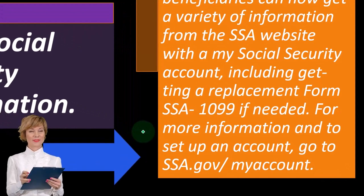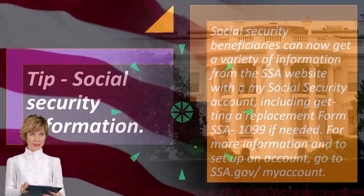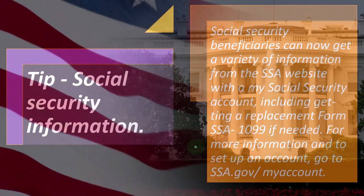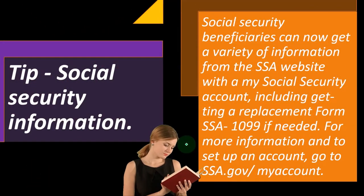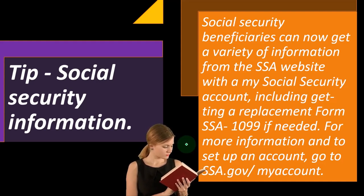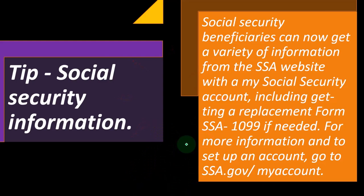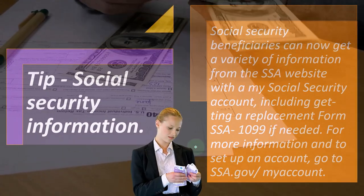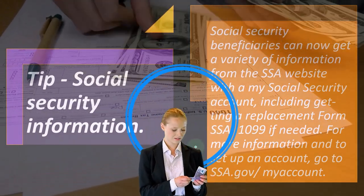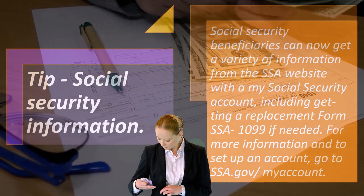Some people think that all government entities are kind of the same, as though they talk to each other all the time. They do share some information, but the IRS doesn't really know exactly what's going on with your state tax situation just because they're both government entities. Social Security information — in terms of identifying who you are — is used by the IRS, but you need to know which place to go to. When talking about taxes based on the 1099 from the SSA, you report that to the IRS, but if you have questions about the amount of benefits you're receiving, you go to the Social Security Administration's website.